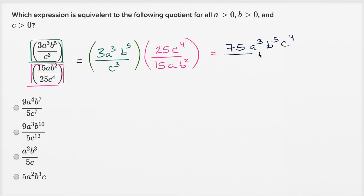And then in the denominator, you're going to have 15 times a times b squared times c to the third power.